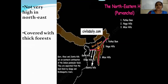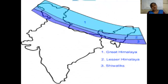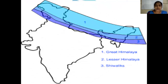These hill ranges are not very high in the northeast. In the northern part, the width is 500 kilometers, but near Arunachal Pradesh it is only 200 kilometers. The area where you have these hill ranges — Garo, Khasi, Jaintia, Naga, Mizo — is covered with thick forest. Now we are going to learn specifically about the Himalayas.